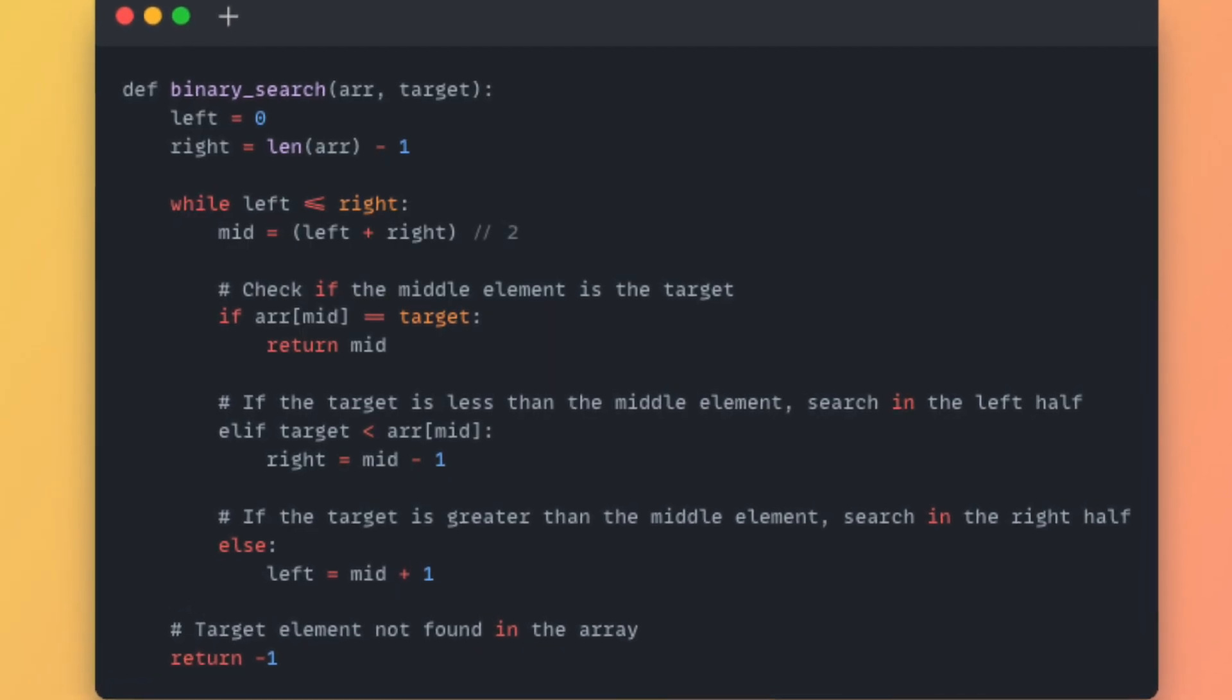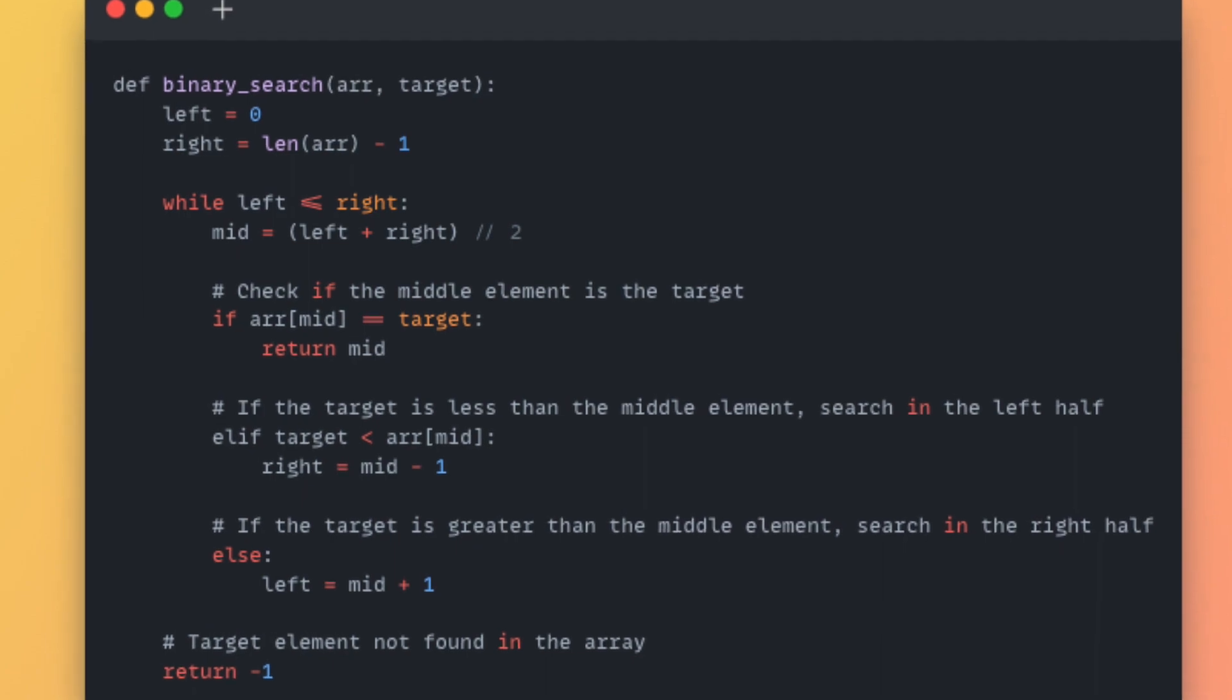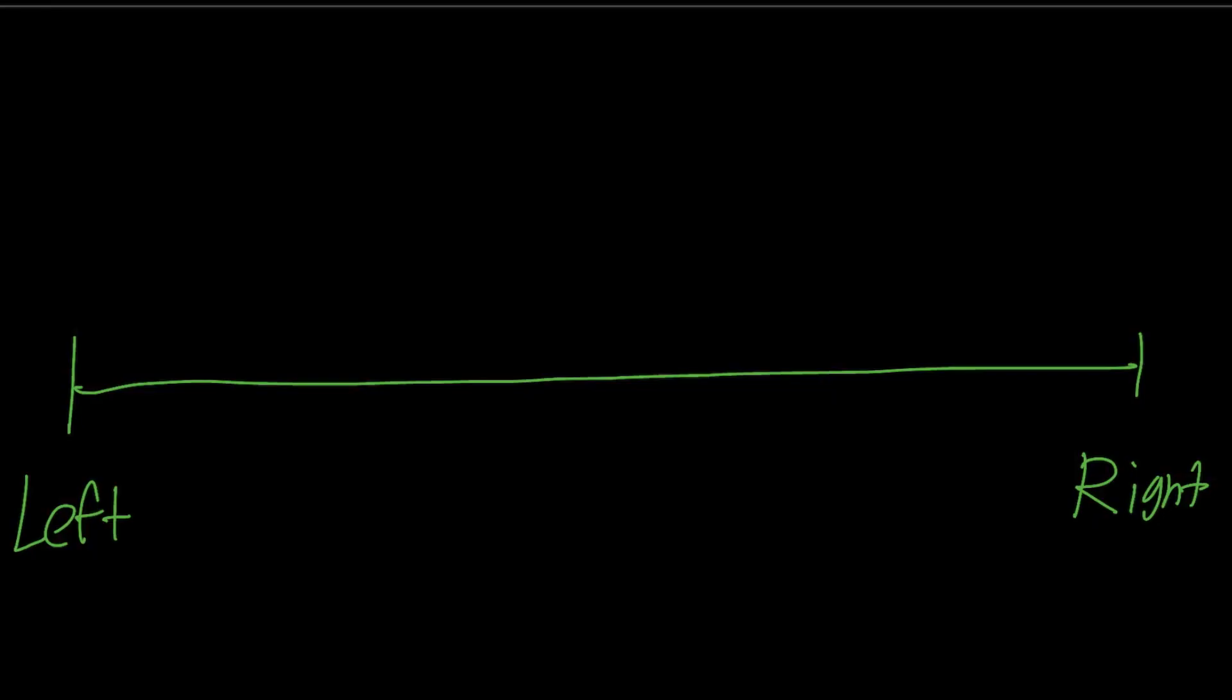So if we were to look up the general binary search template, you'd generally find this exact algorithm. It's pretty straightforward - you start your left and right pointer at the ends and you just keep moving the pointers based on your midpoint until you find your target. If the left and right pointer meet and you still haven't found your target, you generally return minus one.